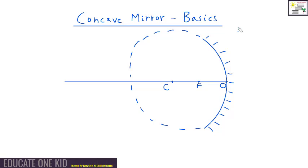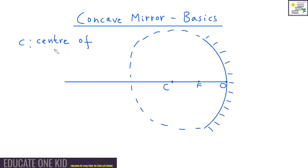Since I've drawn in a circle here, we know that every circle has a center, and that's this point here. This is the center of the circle. This point C is known as the center of curvature. Don't worry too much about this word curvature — just understand that C is the center of the circle that I've drawn. That's good enough.